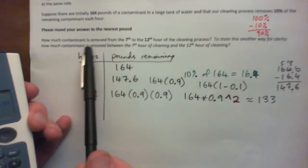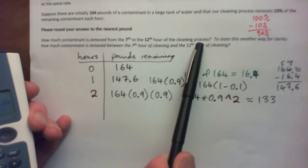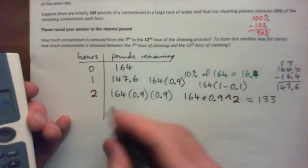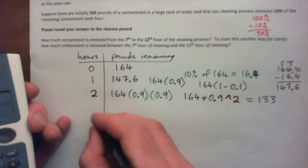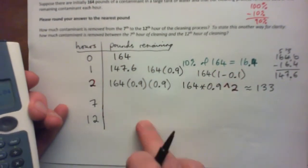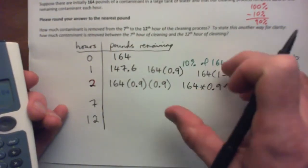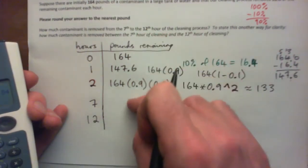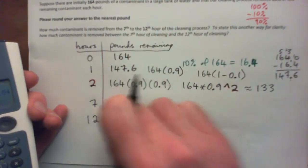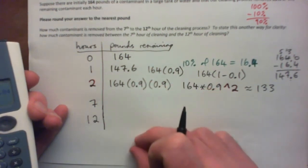But we're interested in how much is removed from the 7th to the 12th hour, or between the 7th and 12th hour. So let's figure out how much is remaining after seven hours. And then maybe we'll figure out how much is remaining after 12 hours. And then we might be able to answer this question. Because what's removed between 7th and 12th hours? Well, let's figure out what's left here and what's left here. And then what if we subtract them? Wouldn't that do it?